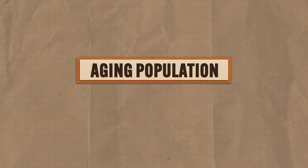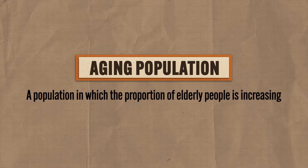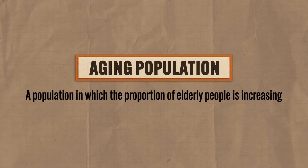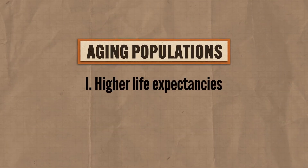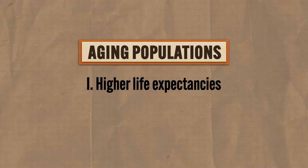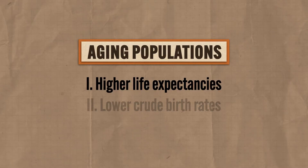Let's define our terms. An aging population describes a population in which the proportion of elderly people is increasing. That occurs generally for two reasons: first, the population is experiencing higher life expectancies, usually associated with better medical technologies and access to healthcare; and second, aging populations have lower crude birth rates. So fewer people are being born while more people are living into old age — it's a population that's aging.